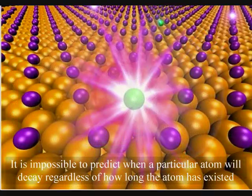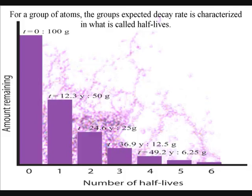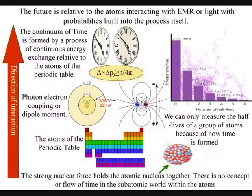It is impossible to predict when a particular atom will decay, regardless of how long the atom has existed. However, for a group of atoms, the expected decay rate is characterized in what is called half-lives. The half-life represents a time after which half of the group's nuclei will have decayed. Mainstream physics has no objective or logical understanding of why we should have such a property as half-life when dealing with decaying atoms. But if time and the future itself is relative to the atoms interacting with electromagnetic radiation or light, it would be logical that probabilities are built into the process itself.